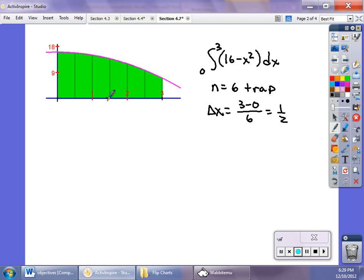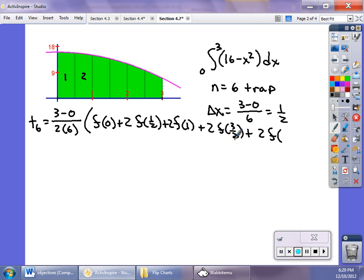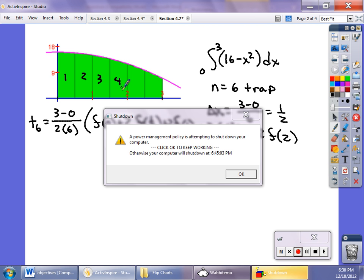If I apply the formula, trapezoid 6 is 3 minus 0 over 2 times 6. Then it's f of my first value, which is 0, then 2 times f(1/2), 2 times f(1), 2 times f(3/2), 2 times f(2), 2 times f(5/2), and finally f(3), which is the last trapezoid. Notice that f(3) is just part of that one trapezoid, so we don't count it twice.